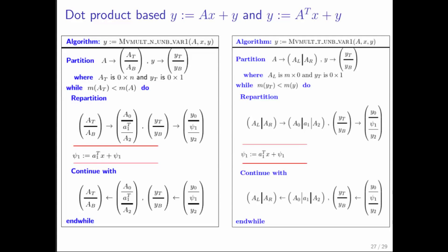On the left we have the dot product based algorithm for A x plus y. And notice that we've marched through the matrix one row at a time. And to make that into an algorithm where we perform A transpose times x, all we have to do is march through the matrix by columns. And notice that the update actually remains exactly the same.